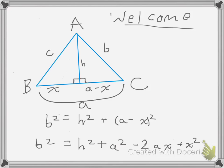First, we need the Pythagorean Theorem to find that b squared equals h squared plus quantity a minus x quantity squared.